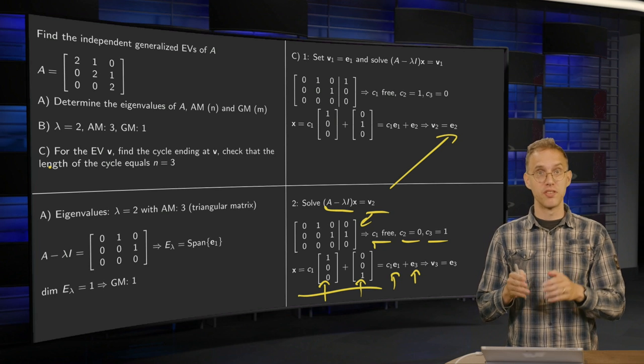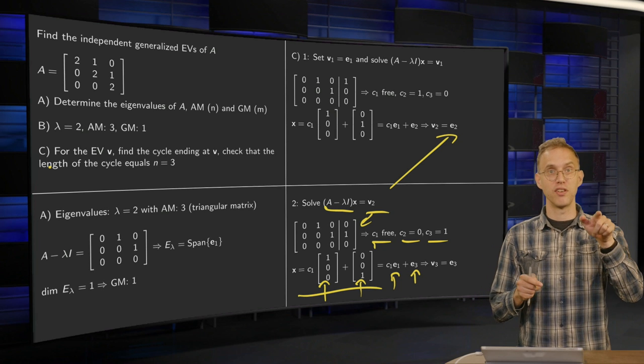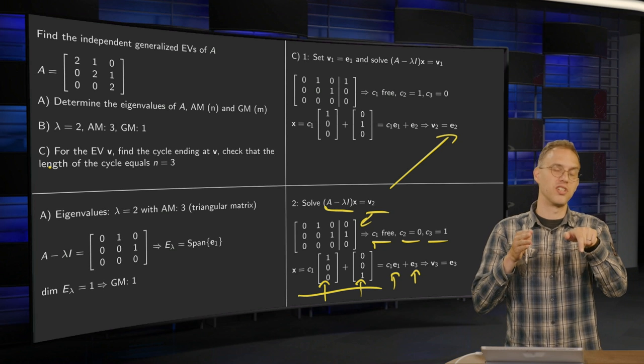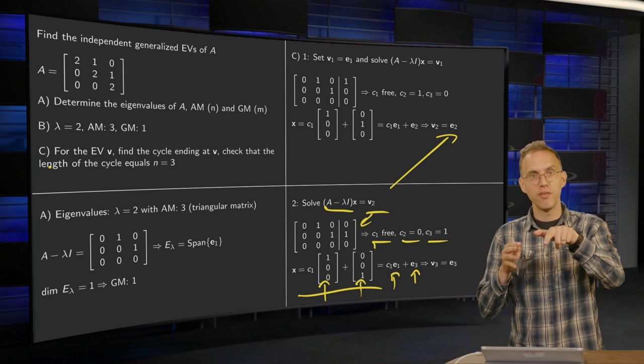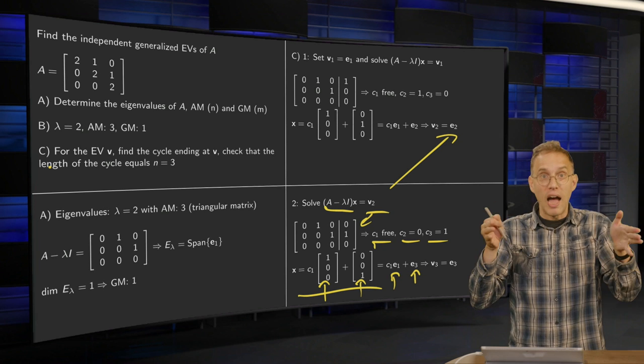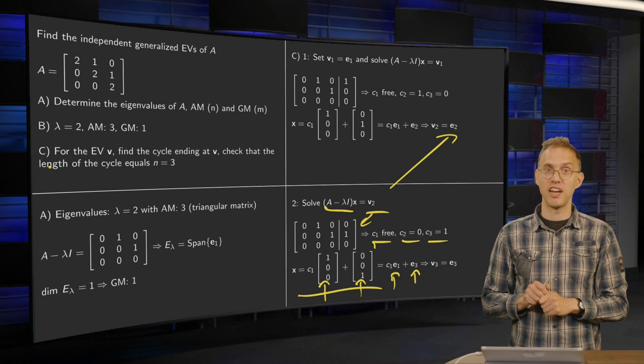So now we have three independent eigenvectors. We started with E1, which was the terminal point. Then we found E2. Then we found E3. We now have three independent generalized eigenvectors.